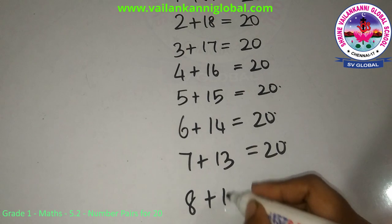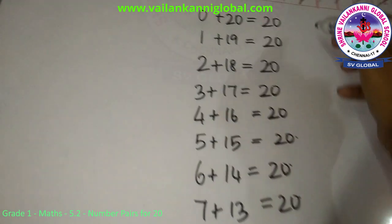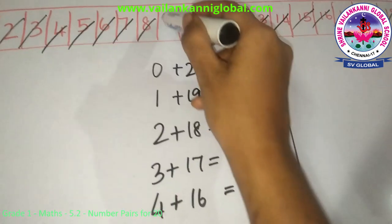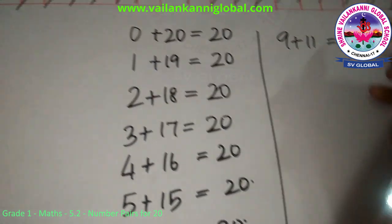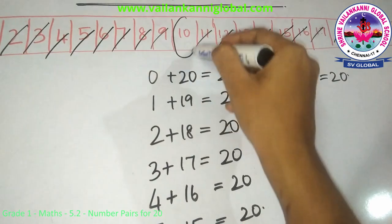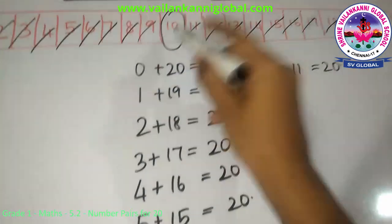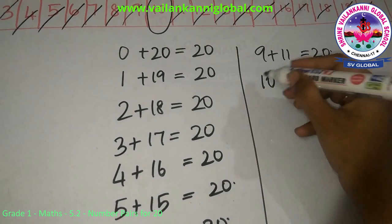8 plus 12 gives me 20. Next, 9 plus 11, 9 plus 11 gives me 20. We know one number will be left out, which is 10. When you add that number again, when you double, 10 plus 10, it gives you 20.